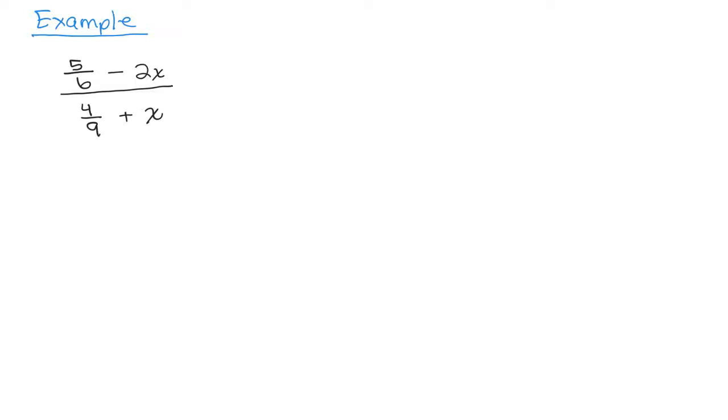We're going to do this example and we're going to use method two because it doesn't have just a single fraction in the numerator and denominator. So we're going to look at the fractions that we see and look at their denominators and decide the least common multiple.